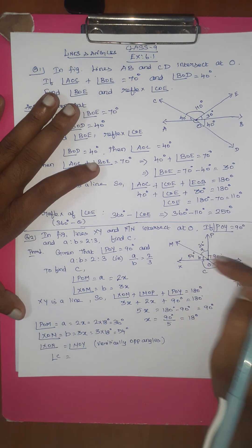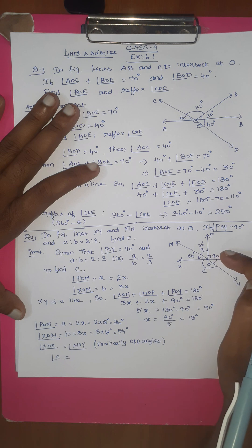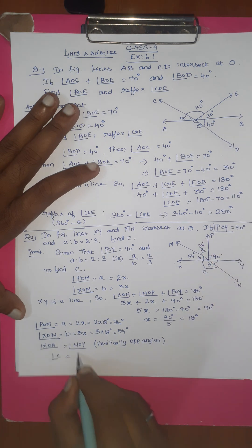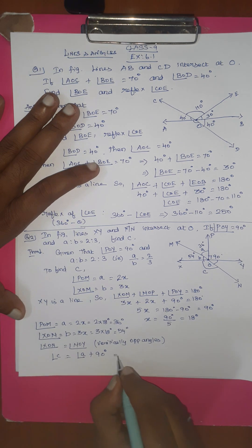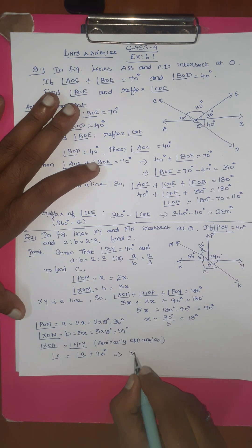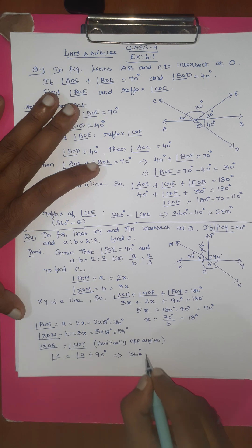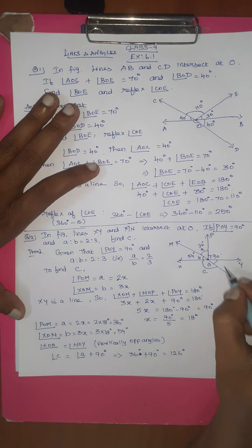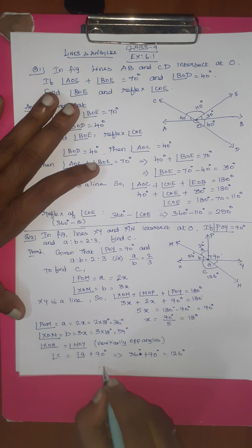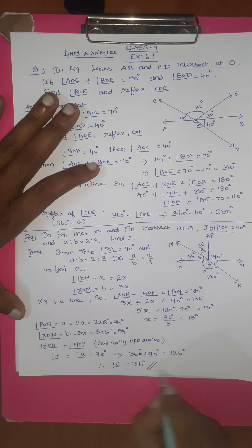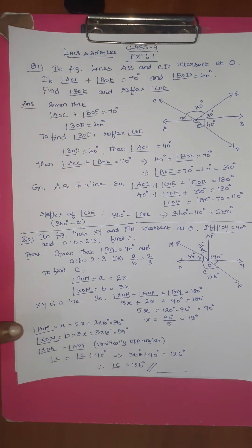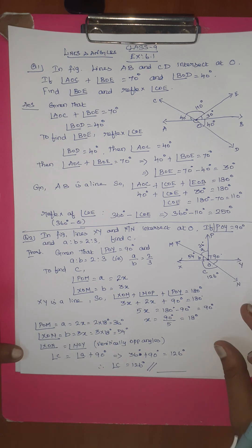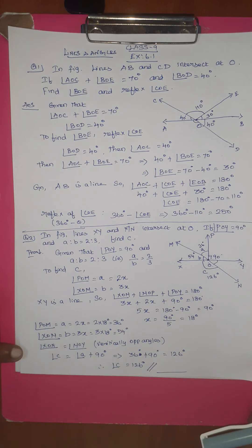Now, MOY equals angle A plus 90 degrees. Angle A is 36 degrees, so 36 plus 90 equals 126 degrees. Since XON is vertically opposite to MOY, angle C equals 126 degrees. It's easy — that's how you complete it.